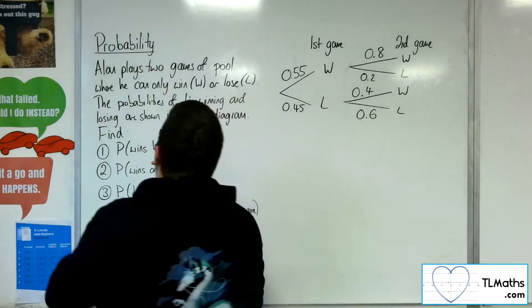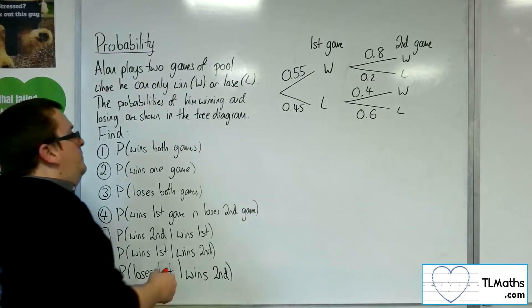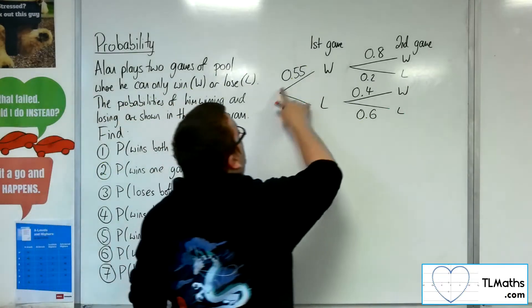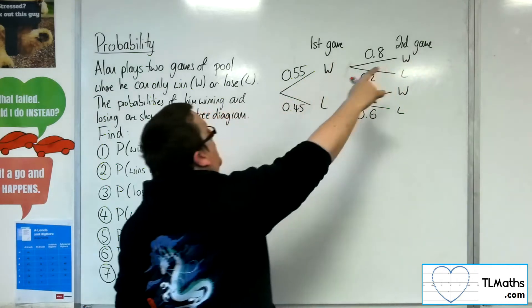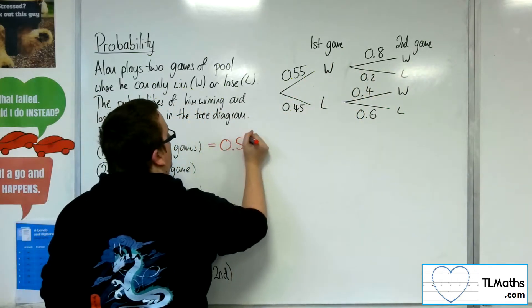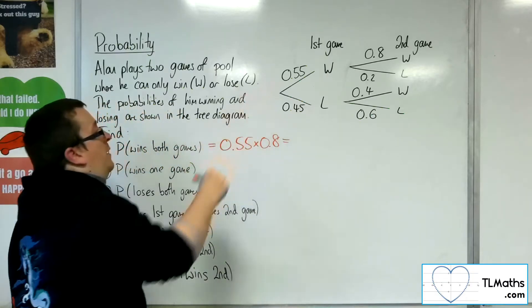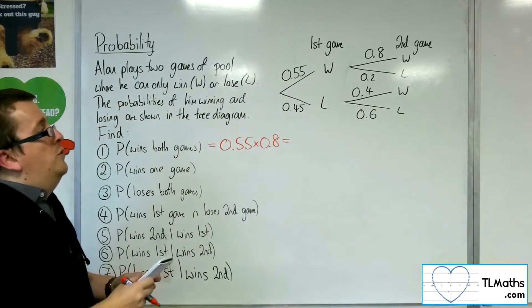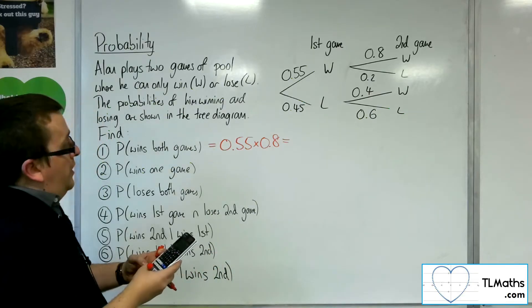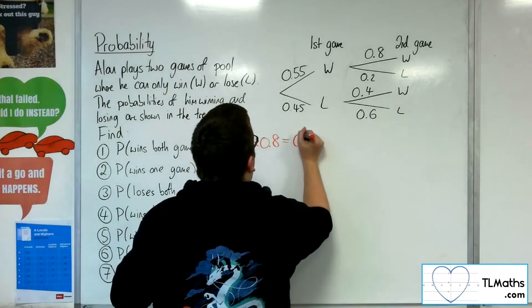First of all, find the probability that he wins both games. So to win both games, you must win the first game and then win the second game. And so it will be 0.55 multiplied by 0.8 — multiplying through the tree. So 0.55 times 0.8 gets us to 0.44.